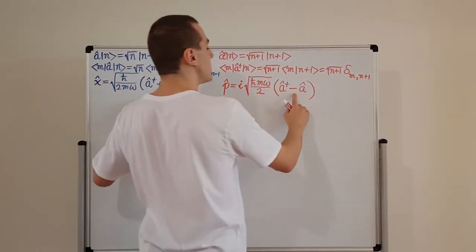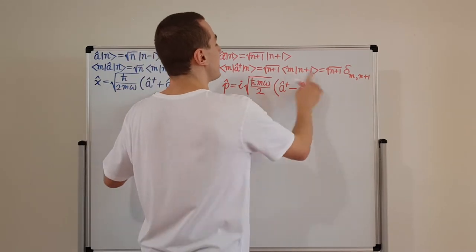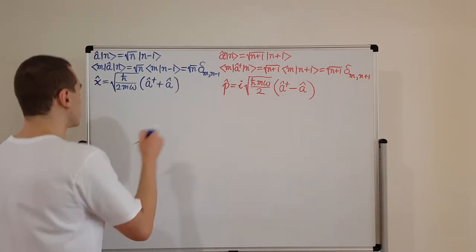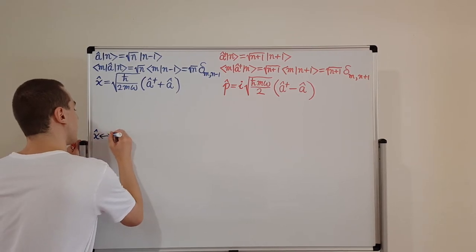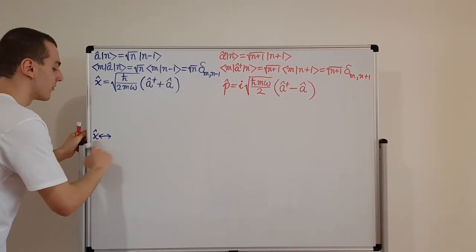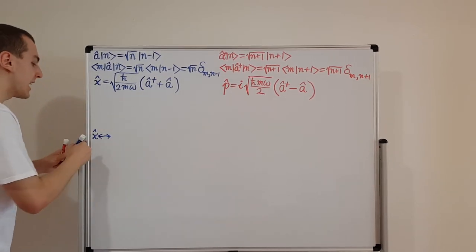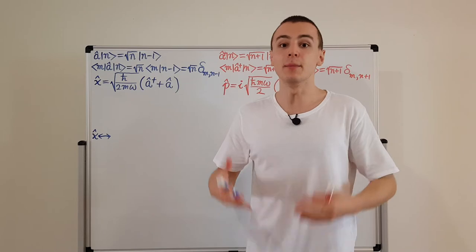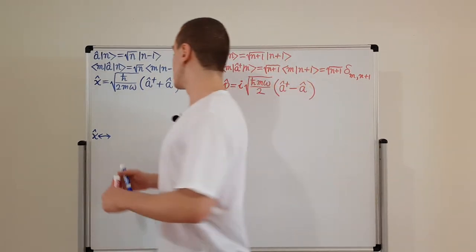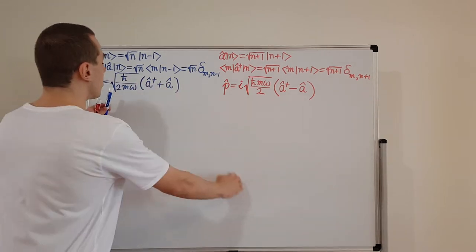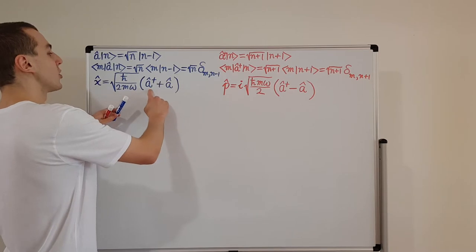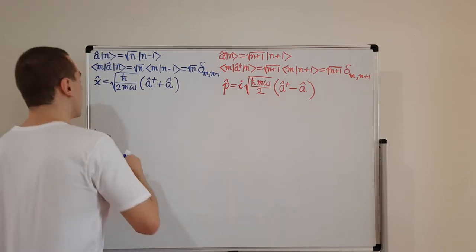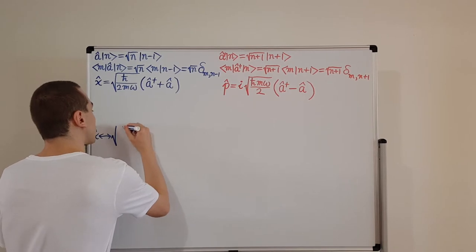For position we have the sum, and for momentum we have the difference — that is a very important point that will be evident when we look at the matrix representations. Let's have a look at the position matrix. I'll use a double-headed arrow rather than an equals sign because I'm not saying x equals this matrix — I'm saying x can be represented by this matrix in the energy eigenbasis. For simplicity, I'll factor the fraction out front.